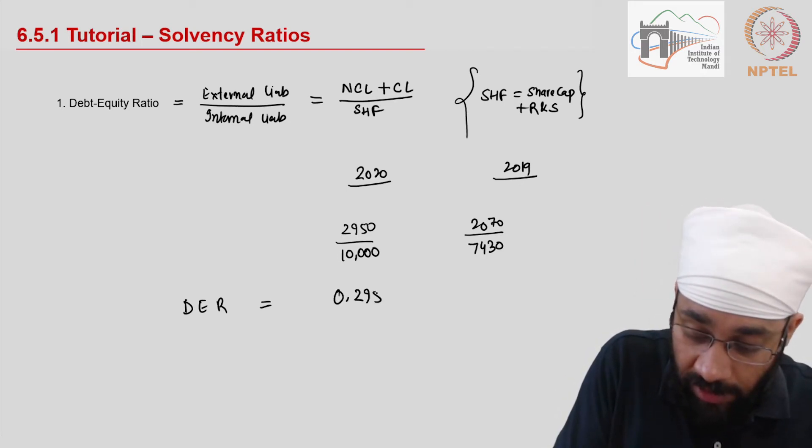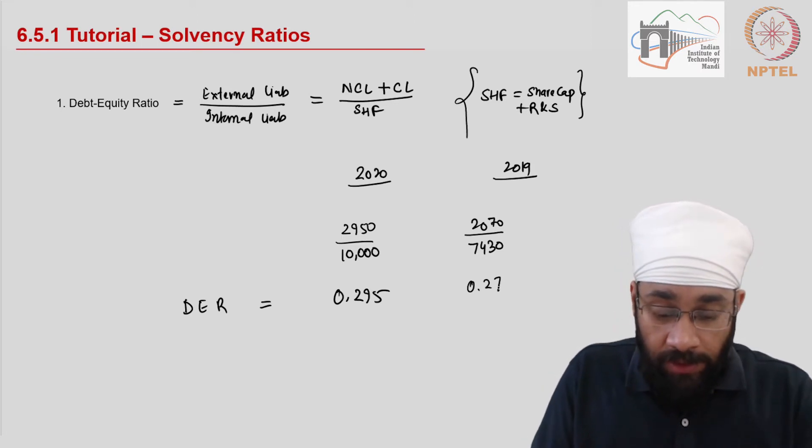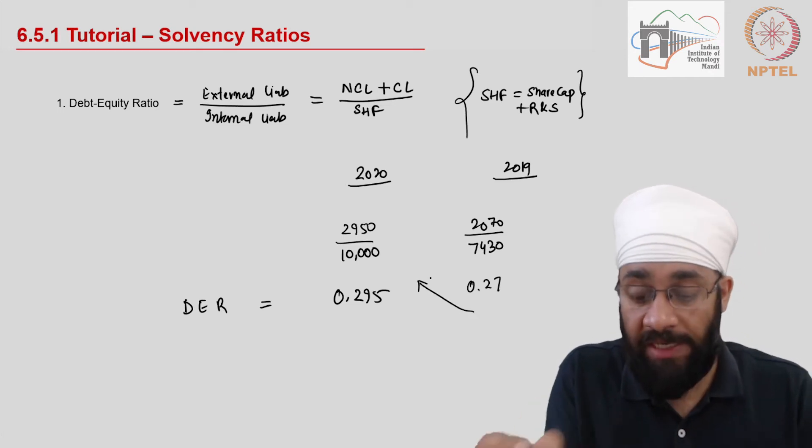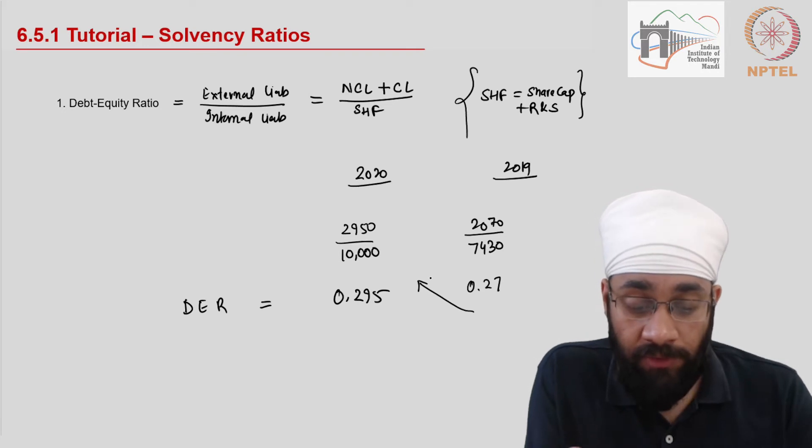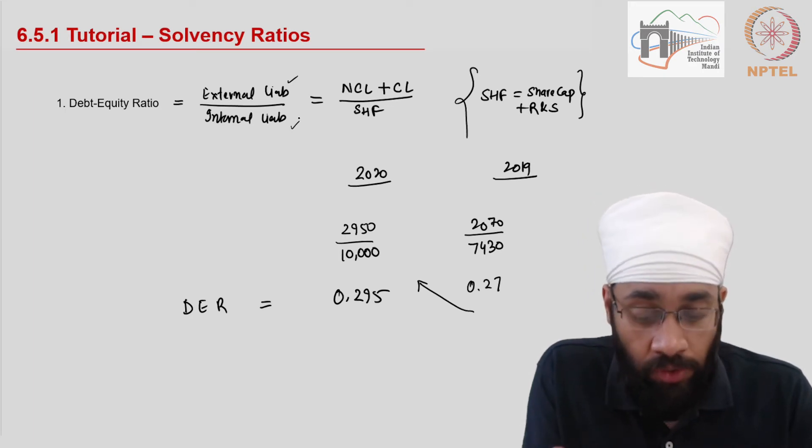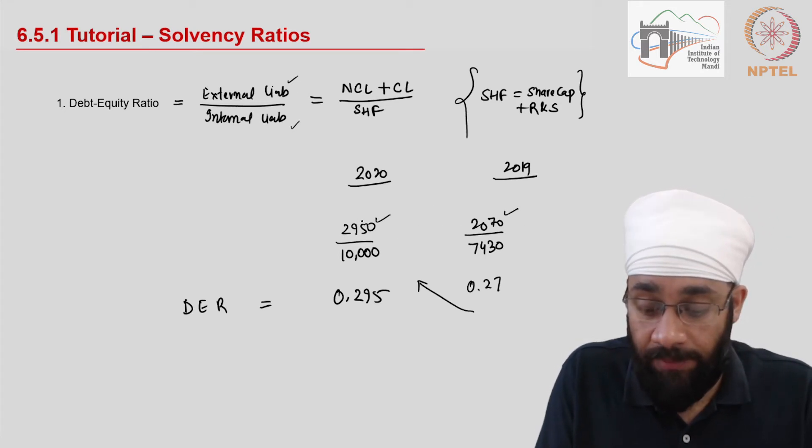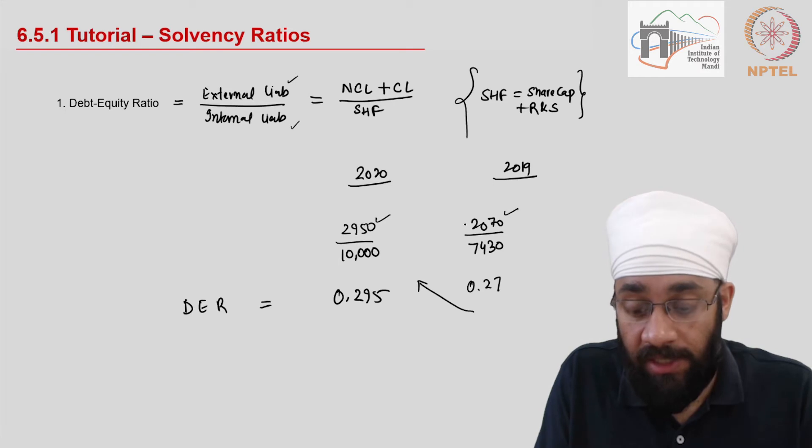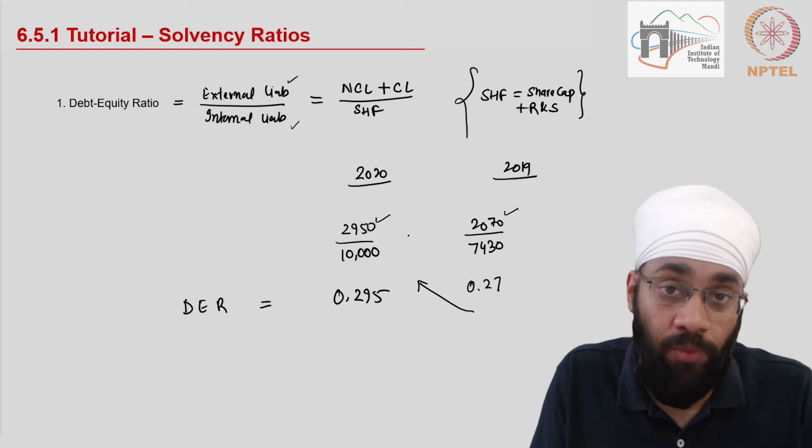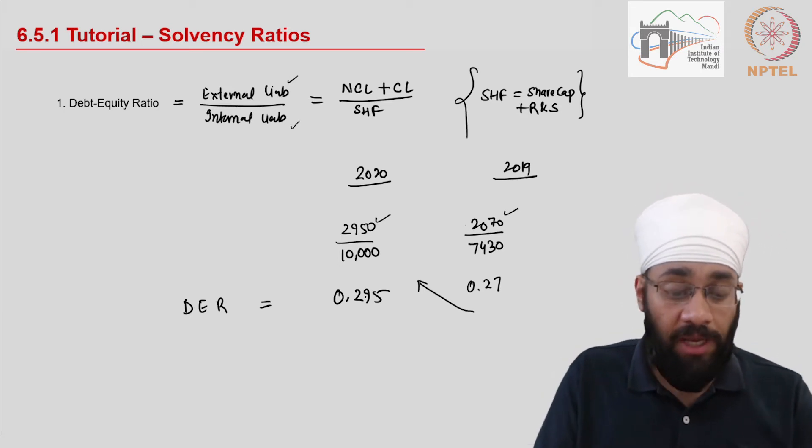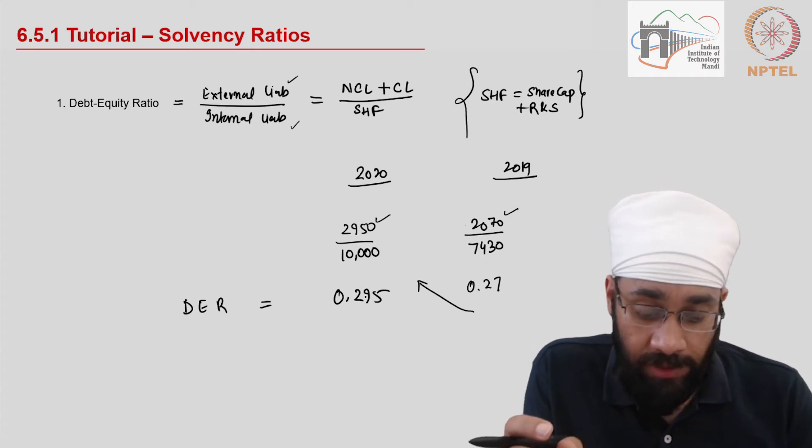This comes out to be 0.29 and 0.27. So you have the debt to equity ratio for the two years. It goes up from 2019 to 2020, meaning the external liabilities in relation to internal liabilities are going up across these two years. If you look at the total of the external liabilities we see that the number is going up. Also the internal liabilities have gone up, but clearly the increase in the external liabilities is more than the increase in the internal liabilities. That's why this ratio is going up. So that's how you calculate debt to equity ratio for a company.